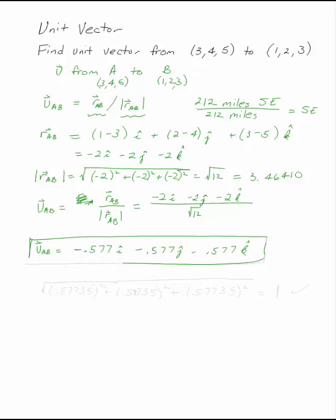You should always check when you're finding a unit vector. Do you have a vector with magnitude 1? If you took this and you squared them, 0.57735 squared plus 0.57735 squared plus 0.57735 squared, which is what we had before with more significant digits. You square each of these and add them up. Take the square root. Do you get 1? Yes, you do. So this is, in fact, our unit vector.